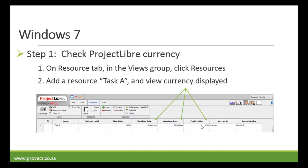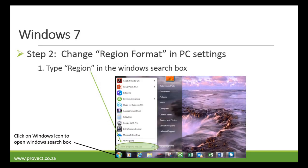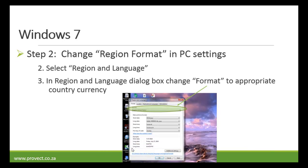Now in order to change the currency, first you're going to click on the Windows icon to open the Windows search box and type region. Then you're going to select your region and language. And in the region and language dialog box, change the format to the appropriate country currency. So we're going to change it to English, United States. Then click on apply.